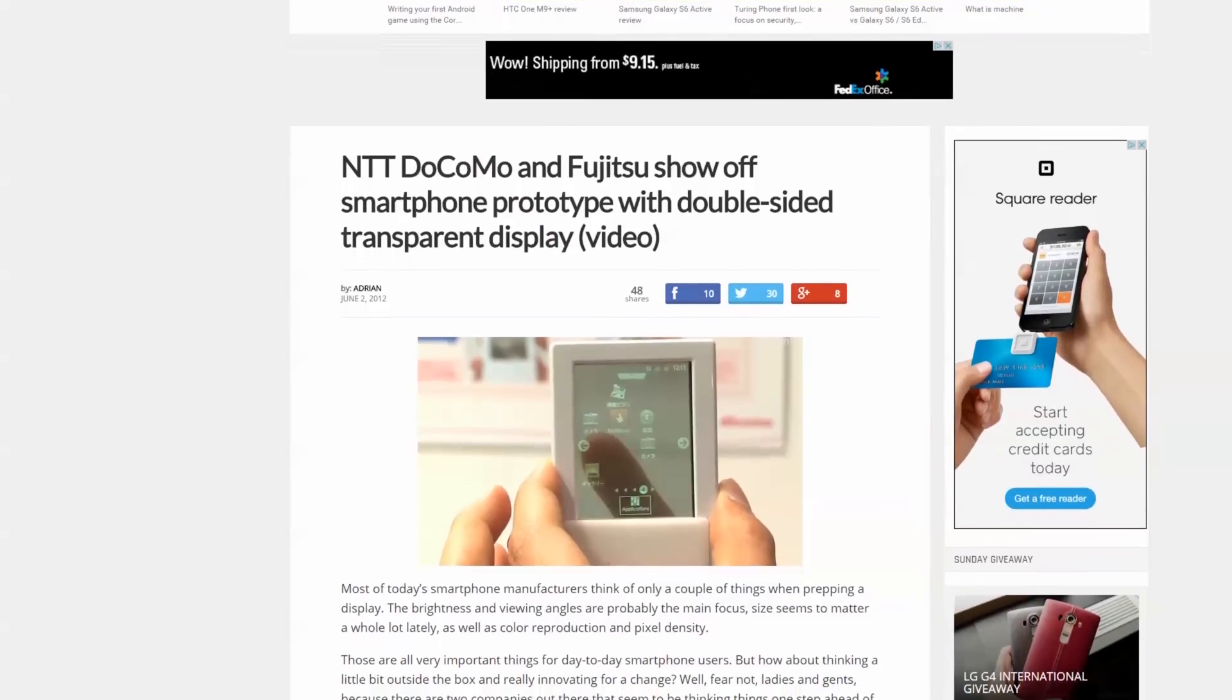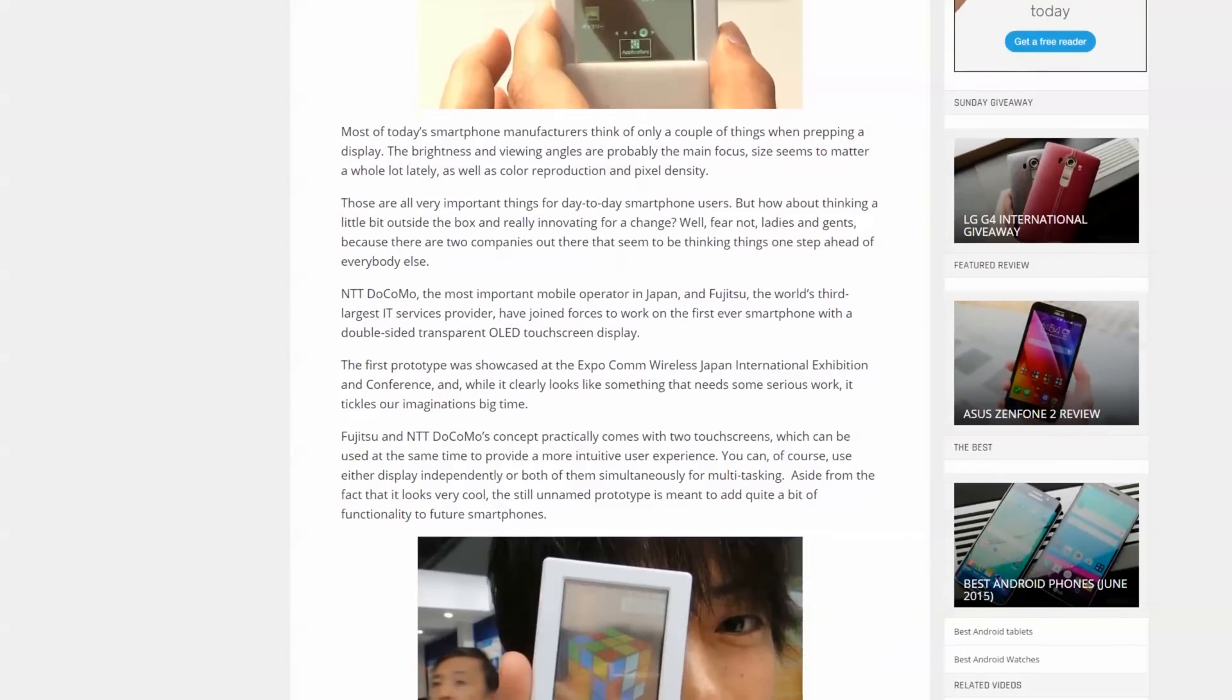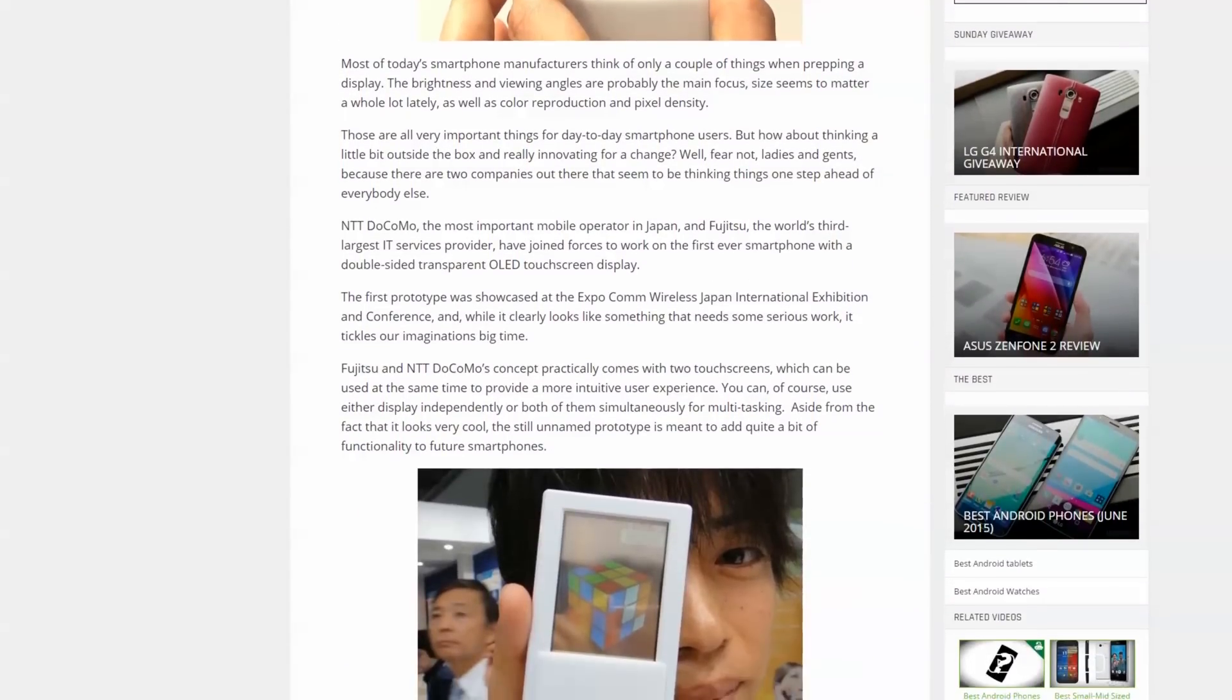Or what about this? Imagine if you had a transparent smartphone display that could work on both sides. Fujitsu's been working on just that thing, allowing users to grip an on-screen object from both sides of the phone.